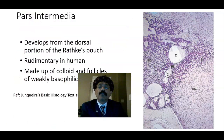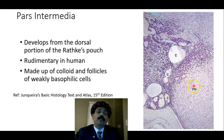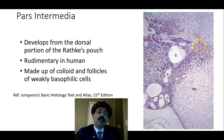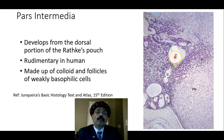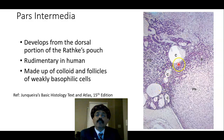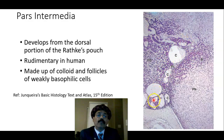The pars intermedia is present between the pars nervosa and pars distalis. It is part of the adenohypophysis, close to the neurohypophysis. It is composed of some cysts with colloid and is rudimentary in humans, containing some weakly basophilic follicles. In humans and other mammals its role is not very important, but in fish and amphibians the pars intermedia produces the melanocyte stimulating hormone.